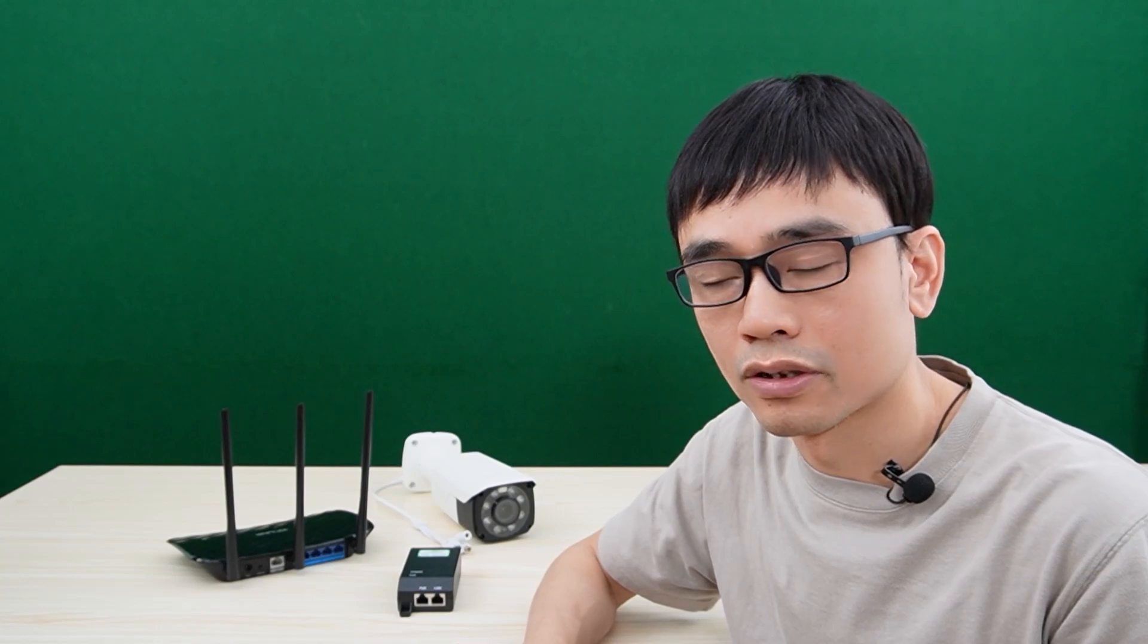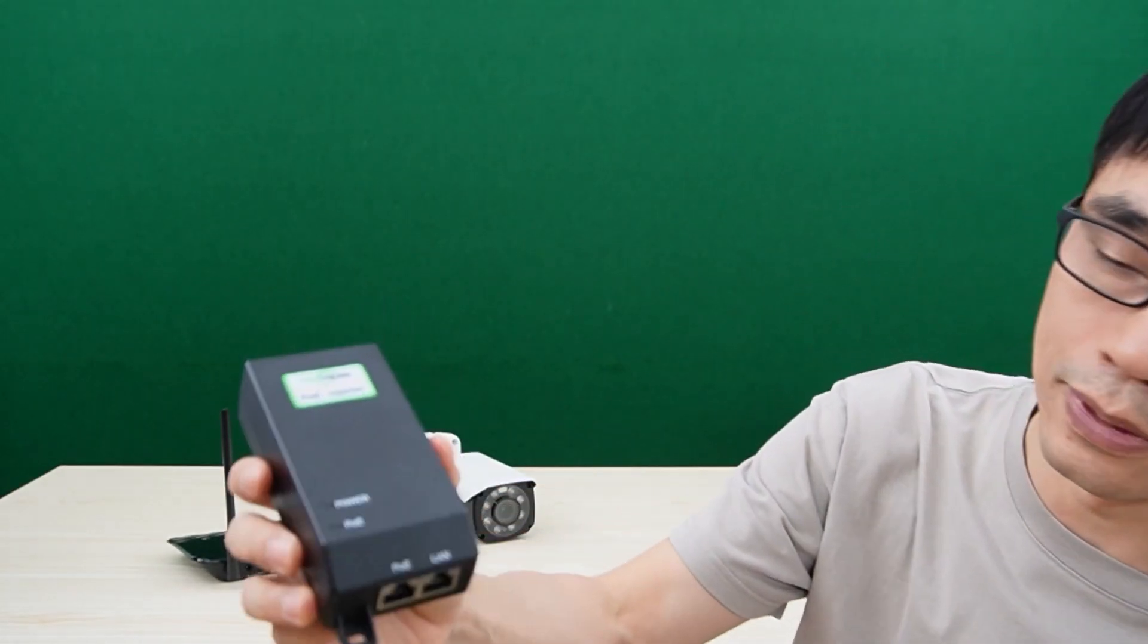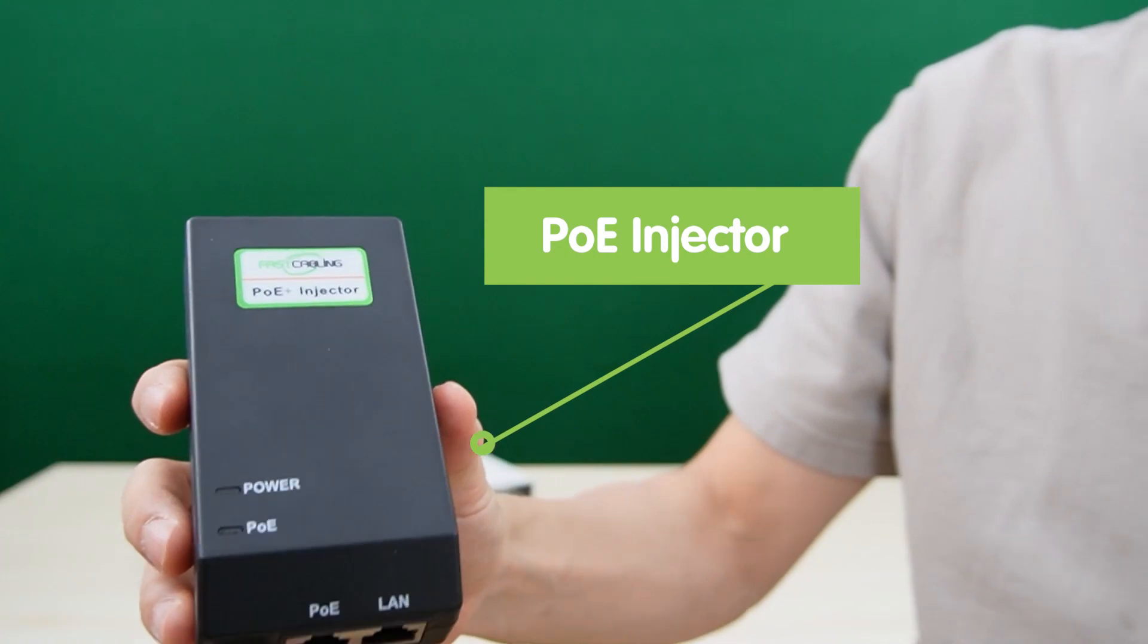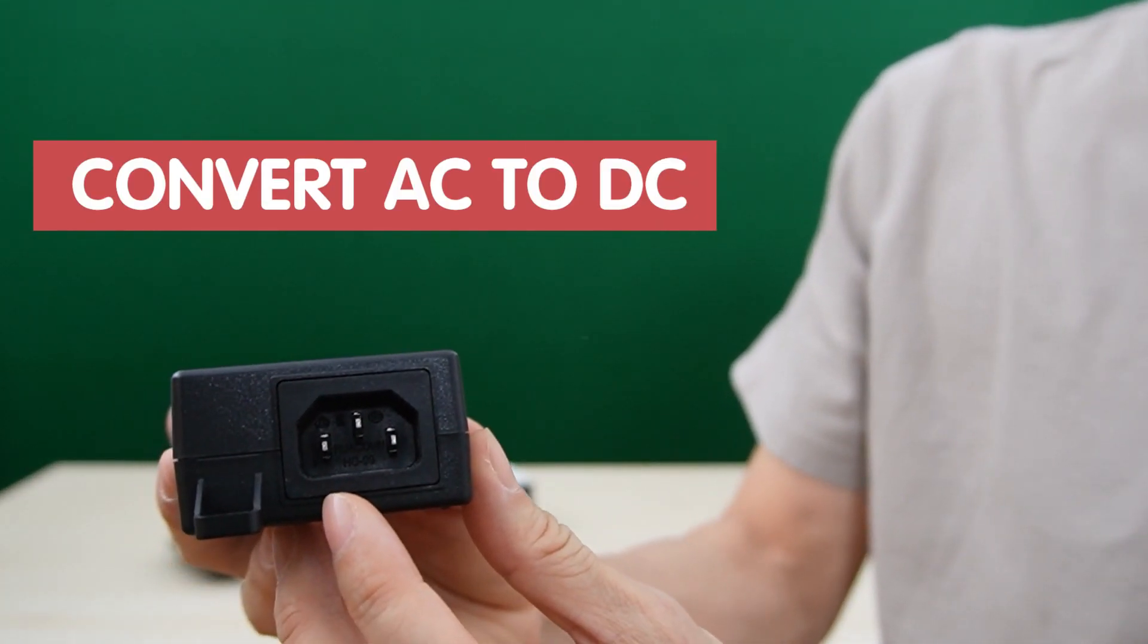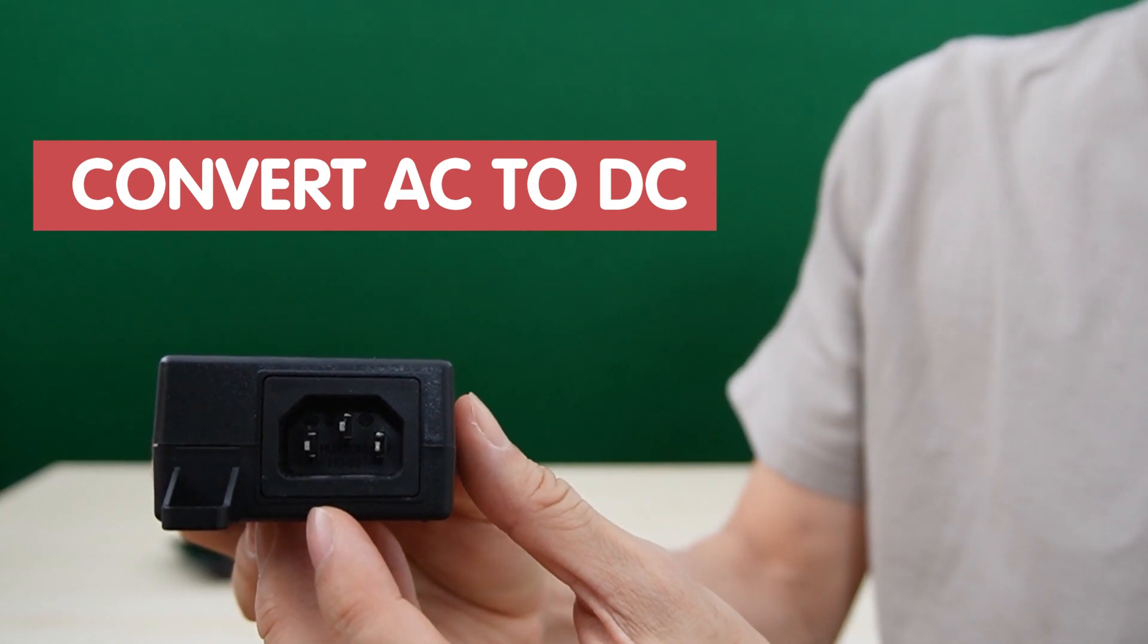First thing you need is the power source. This router doesn't supply PoE, so you need to have a power source. Here we got a very typical PoE injector. There are three ports. The input port will take the AC power and convert to the DC PoE power.